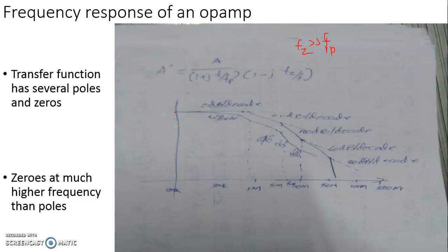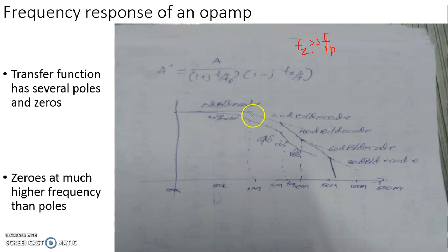For this IC, we assume that there are four different poles respectively at 1 megahertz, 8 megahertz, 10 megahertz, and 55 megahertz. Initially, as frequency increases, the gain is constant and the phase difference between output and input is negligibly small — the output lagging behind the input. As the frequency reaches the first pole frequency, the gain falls by 3 dB and by that time the phase angle will be 45 degrees.